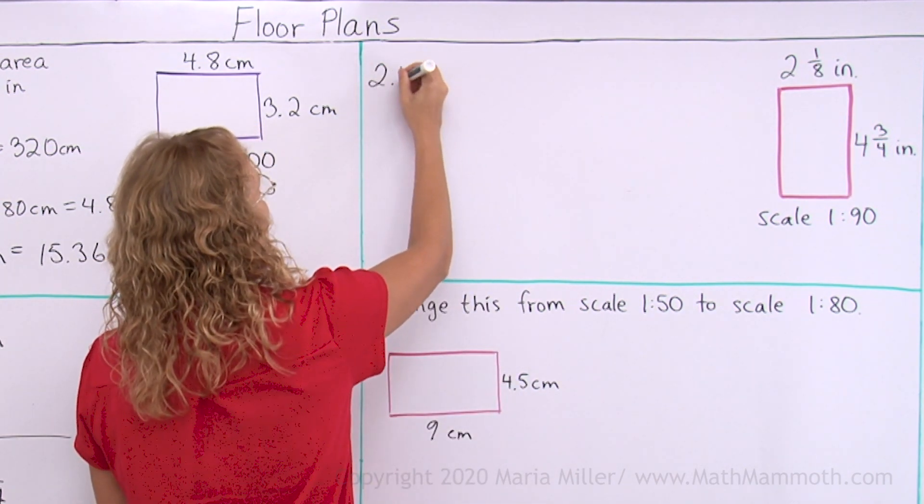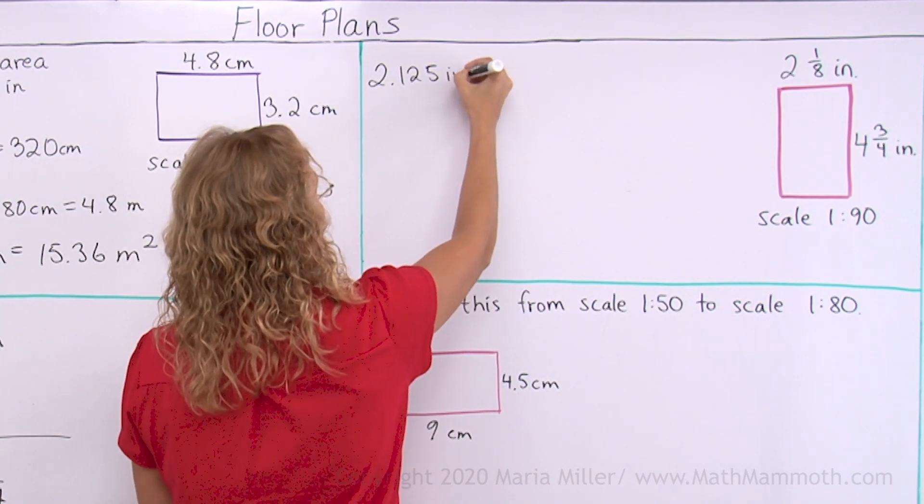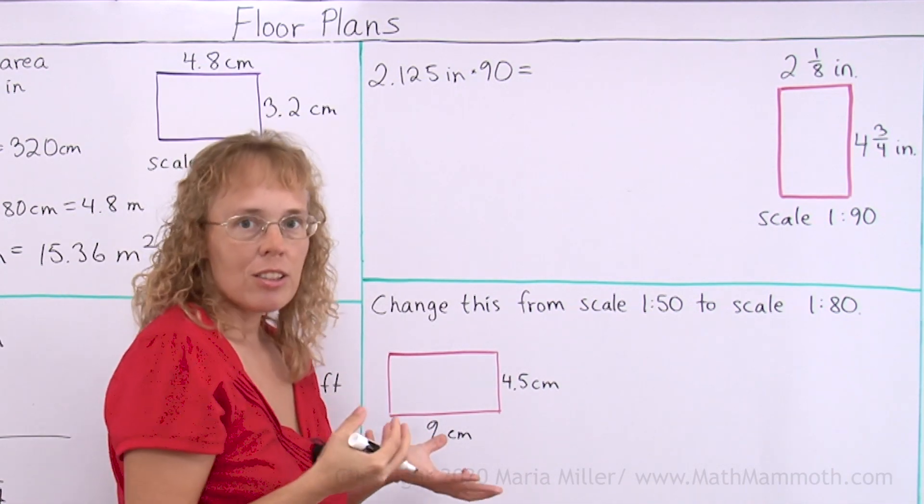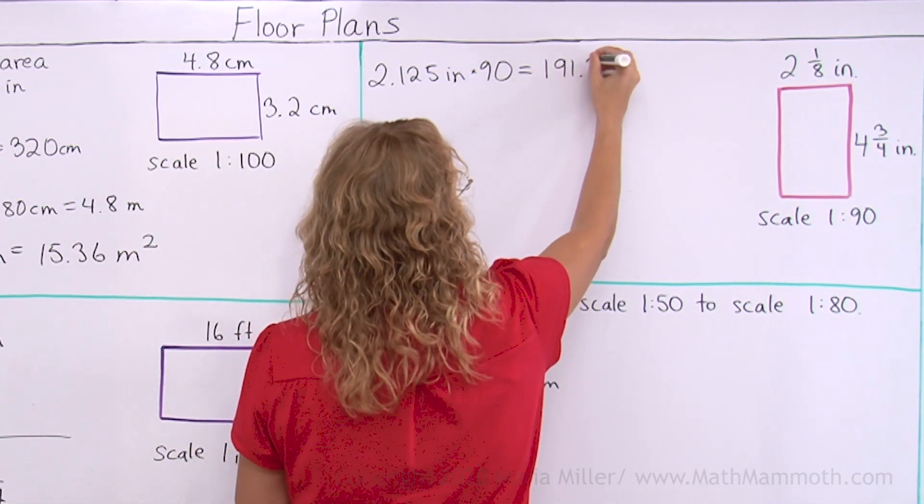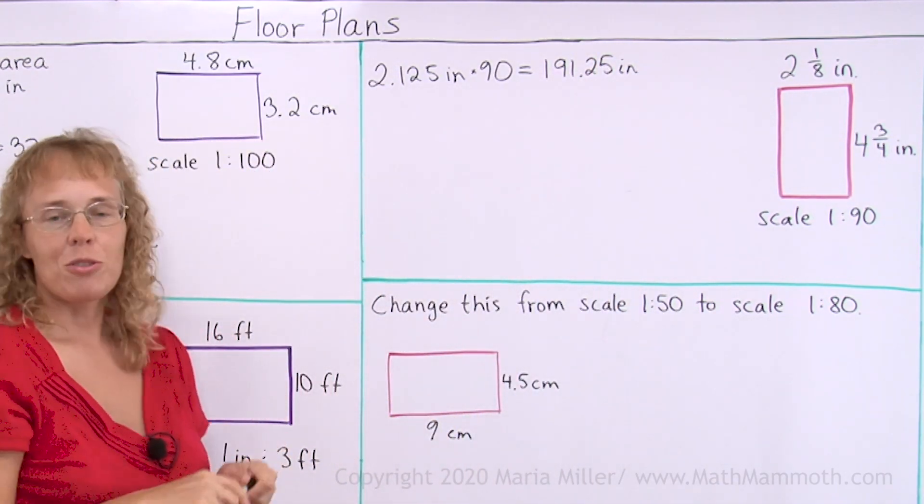It would be 2.125, right? And then that is in inches, and we multiply it by 90. You use your calculator to get this. And it will be 191.25 inches. So that's how long the room is in reality.